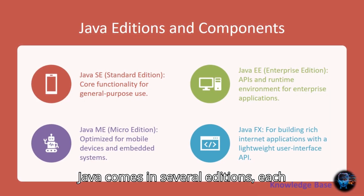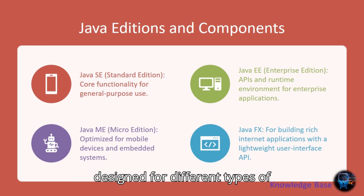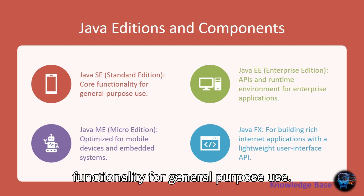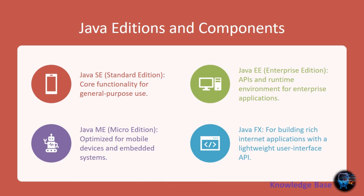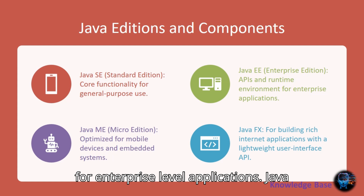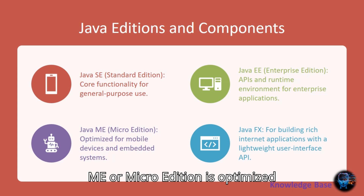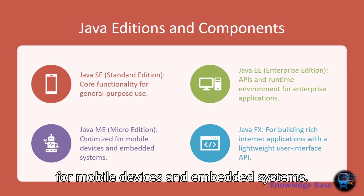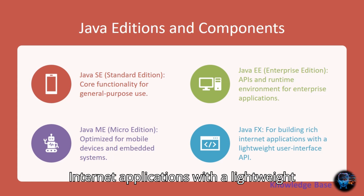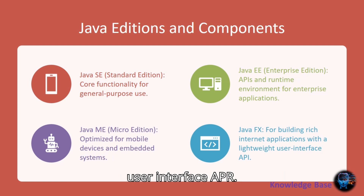Java comes in several editions, each designed for different types of applications. Java SE, or Standard Edition, provides core functionality for general-purpose use. Java EE, or Enterprise Edition, includes APIs and runtime environments for enterprise-level applications. Java ME, or Micro Edition, is optimized for mobile devices and embedded systems. Java FX is used for building rich internet applications with a lightweight user interface API.